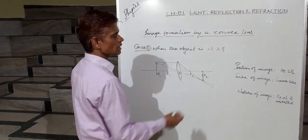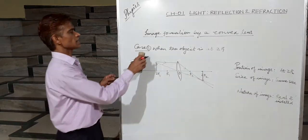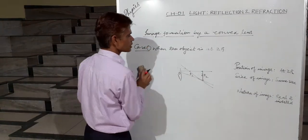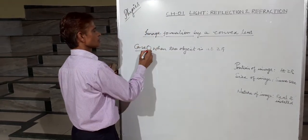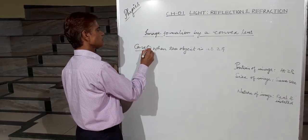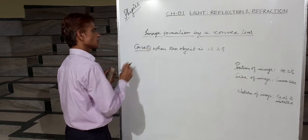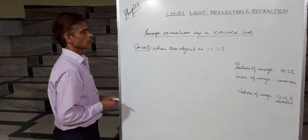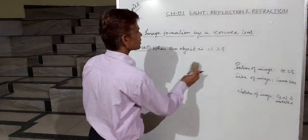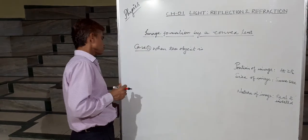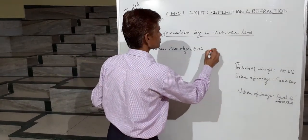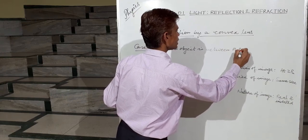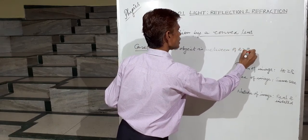Real rays are meeting, and the tip of the arrow is below, so a real and inverted image is formed. This was case number 3. Now case number 4: when the object is between F1 and 2F1.